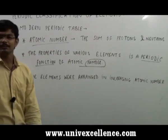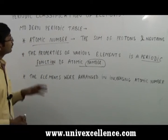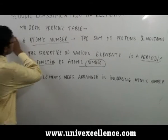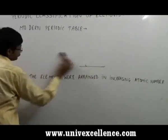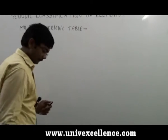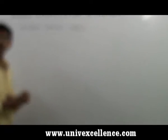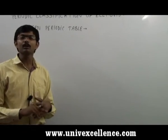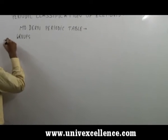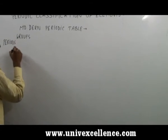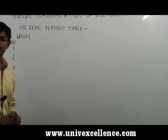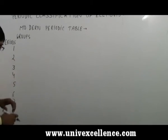So by this way we got a firm classification which is used till date for the classification of elements. The table was divided again into groups and periods. The basic idea or the framework was taken from the Mendeleev's periodic classification only. There were 8 periods in total and the number of groups were 18 in total.